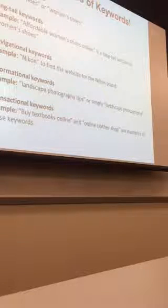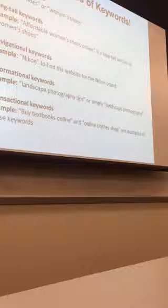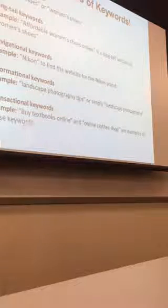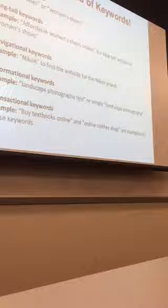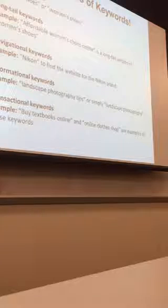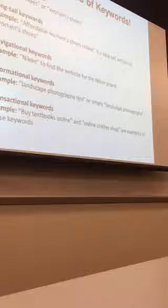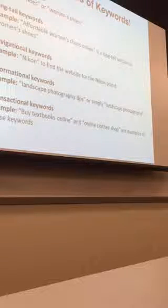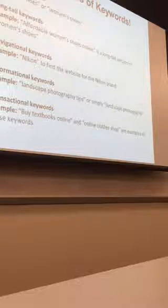Informational keywords — like 'landscape photography tips' — can be used mostly for blogs and content. Someone searching that isn't there to buy; they just want to learn. So you have to decide: am I going to use that keyword? If you want to sell something, that's not a good keyword for your page — but it can be good for a blog post to build credibility with your audience. The best type — my favorite — is transactional, like 'buy textbook online.' That means somebody wants to buy. If they find your website, they're going to buy — there's a transaction.